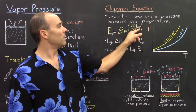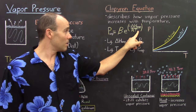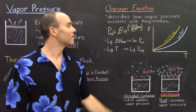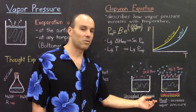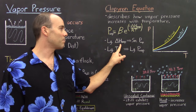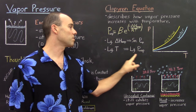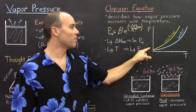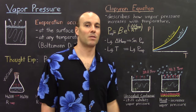Now, temperature is in the denominator of this negative exponent. So the larger the temperature, the larger the vapor pressure. Larger enthalpies of vaporization mean smaller vapor pressures, and larger temperatures mean larger vapor pressures. And if you plot vapor pressure versus temperature, you end up with this curved exponential plot.